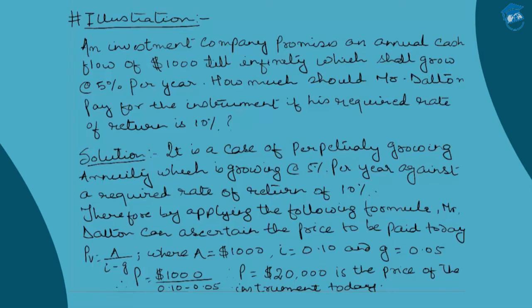In this session we shall be discussing the calculation of the present value of a growing annuity with the help of a numerical. We shall also be taking up our last topic under the chapter on time value of money — that is, multi-period compounding — which shall bring an end to the entire chapter dedicated to time value of money. Let's start with an illustration for the present value of a growing annuity extending to infinity.